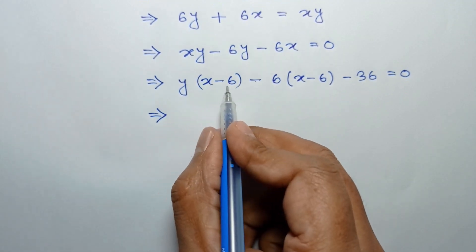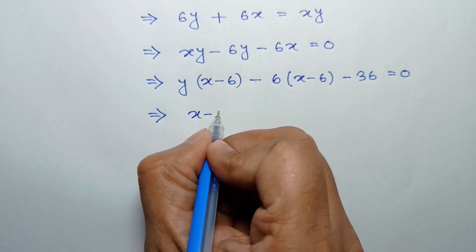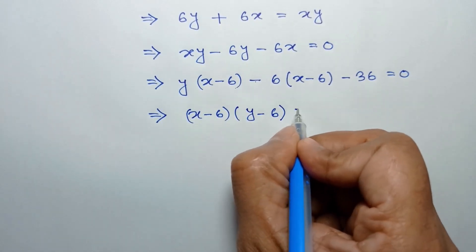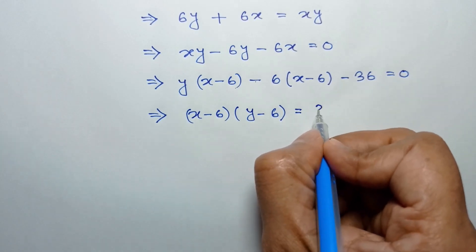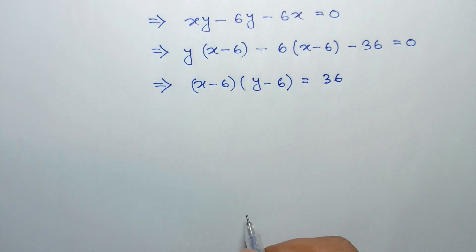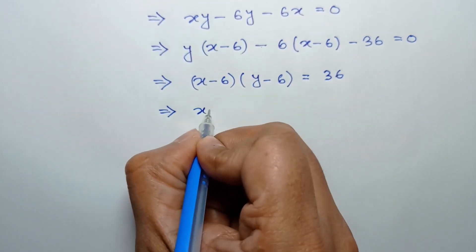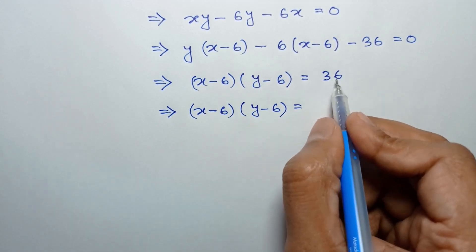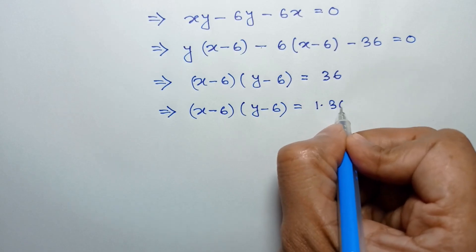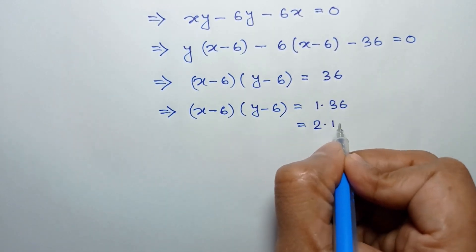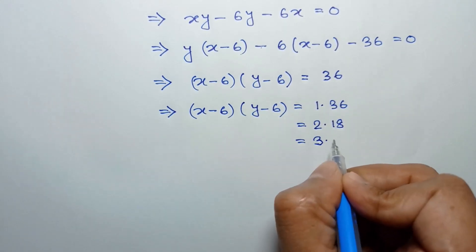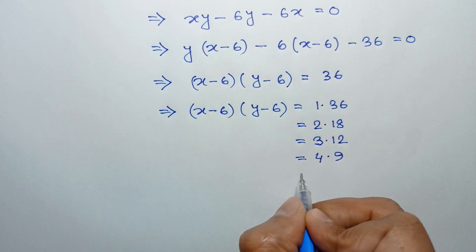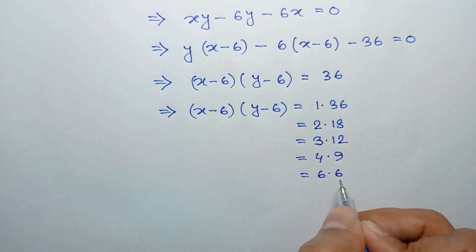Taking common (x minus 6), we can write (x minus 6) times (y minus 6) is equal to 36. Now, 36 can be written as 1 times 36, equals 2 times 18, equals 3 times 12, equals 4 times 9, equals 6 times 6.